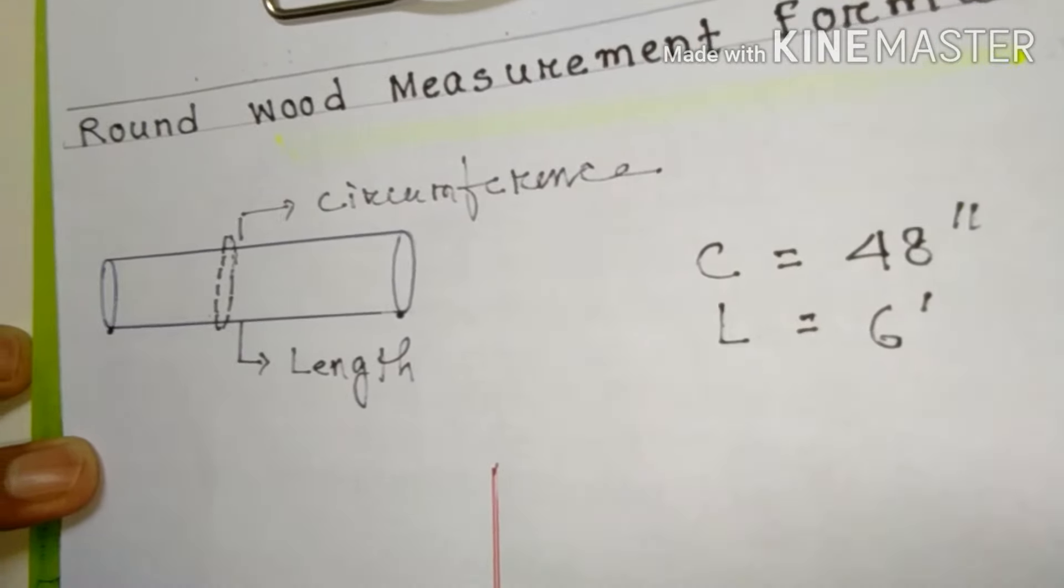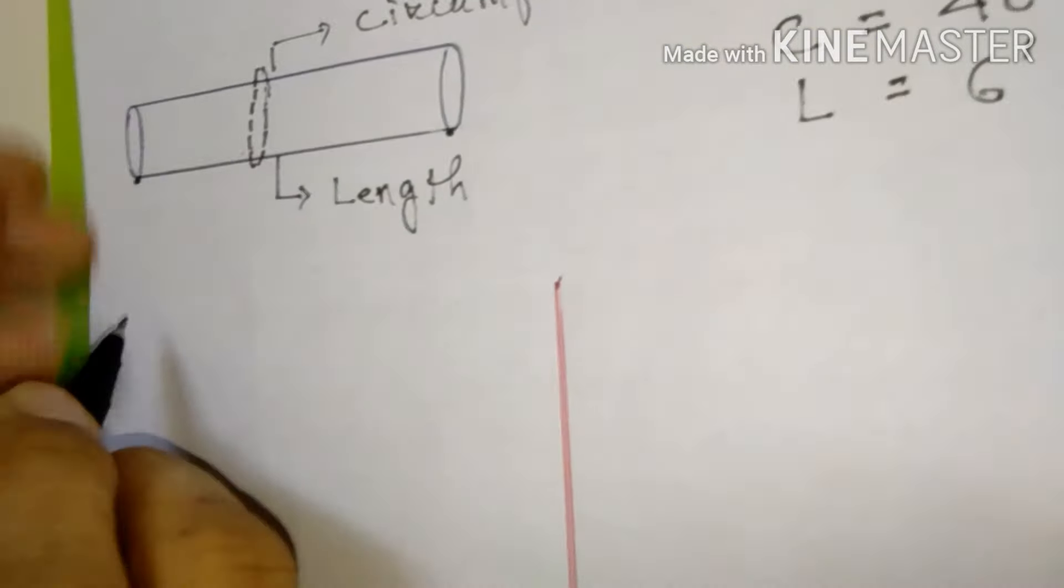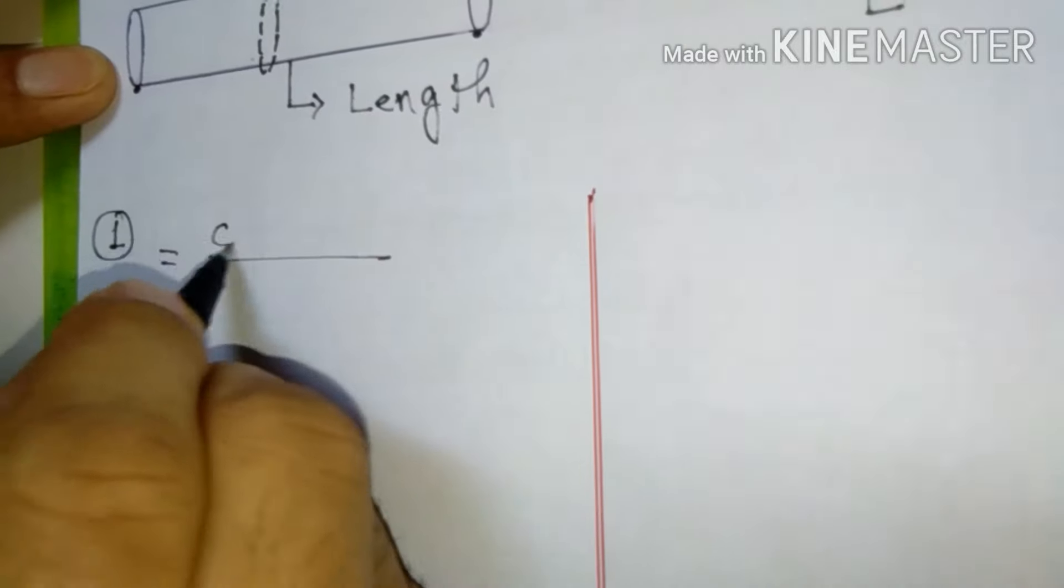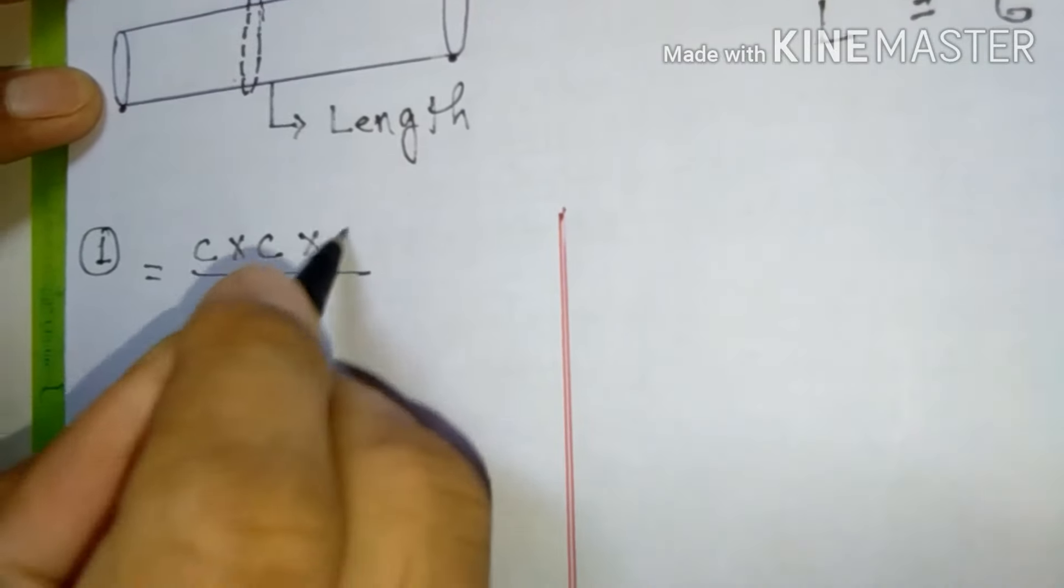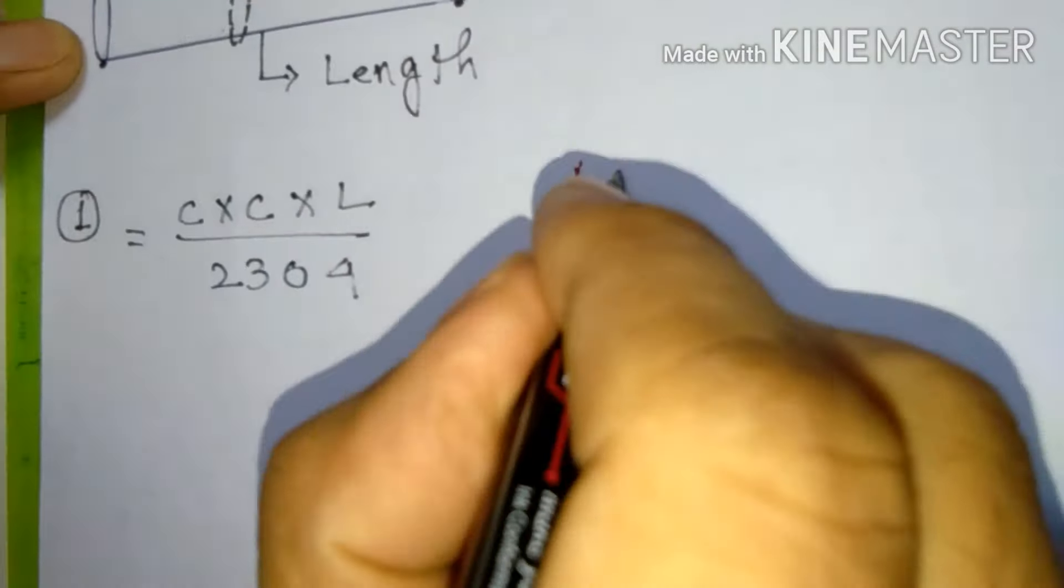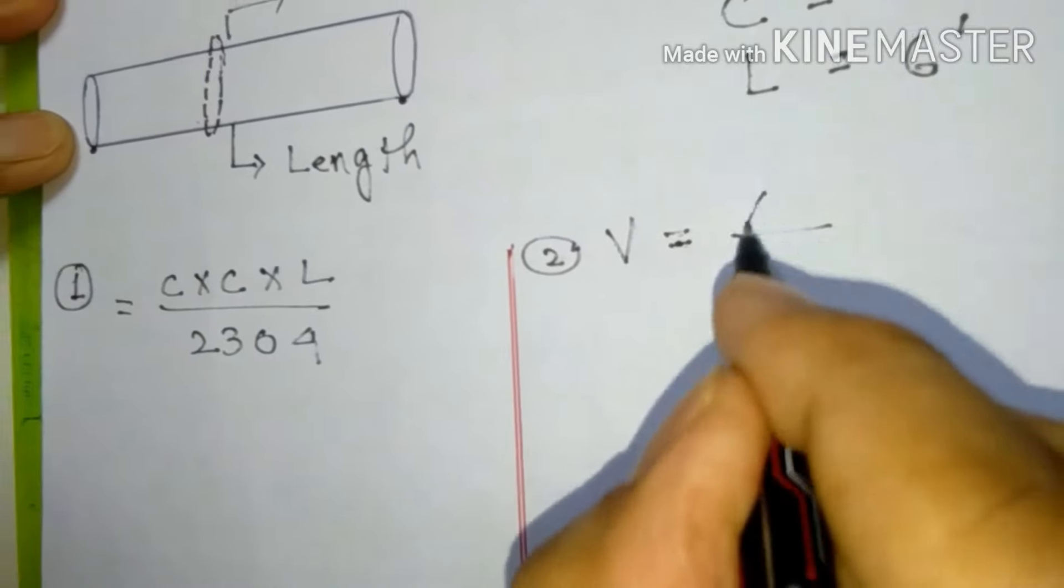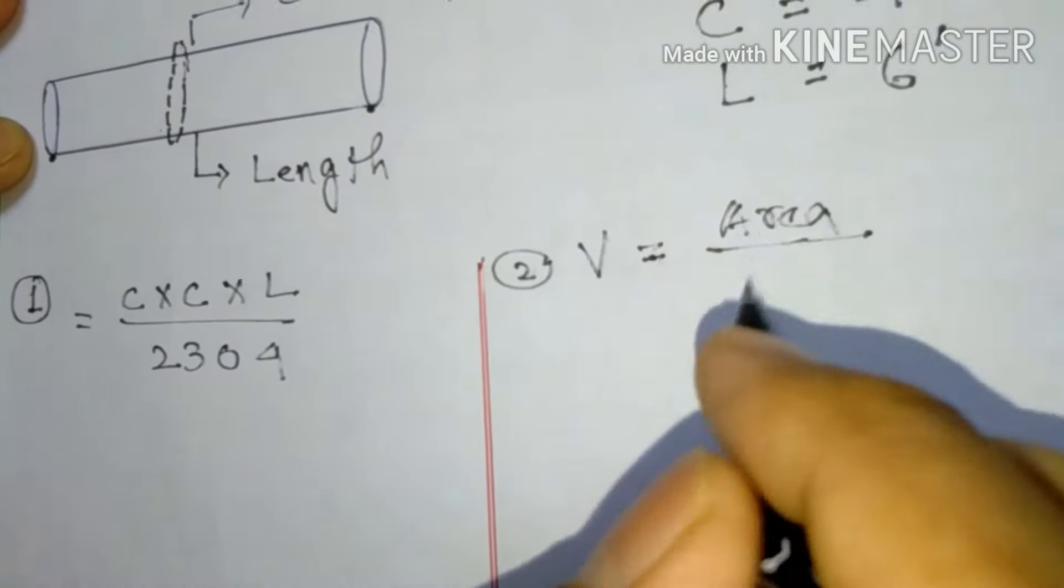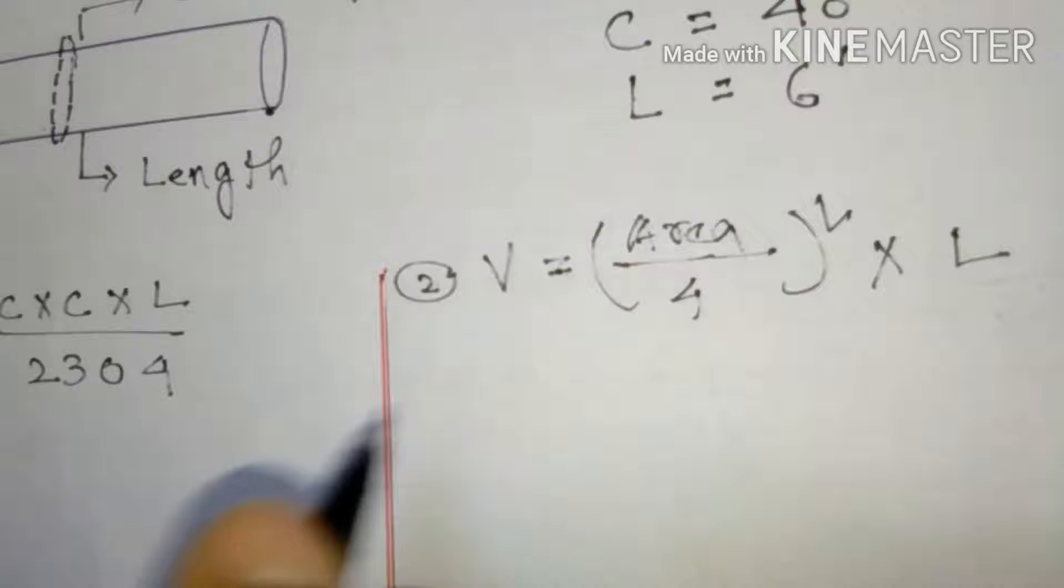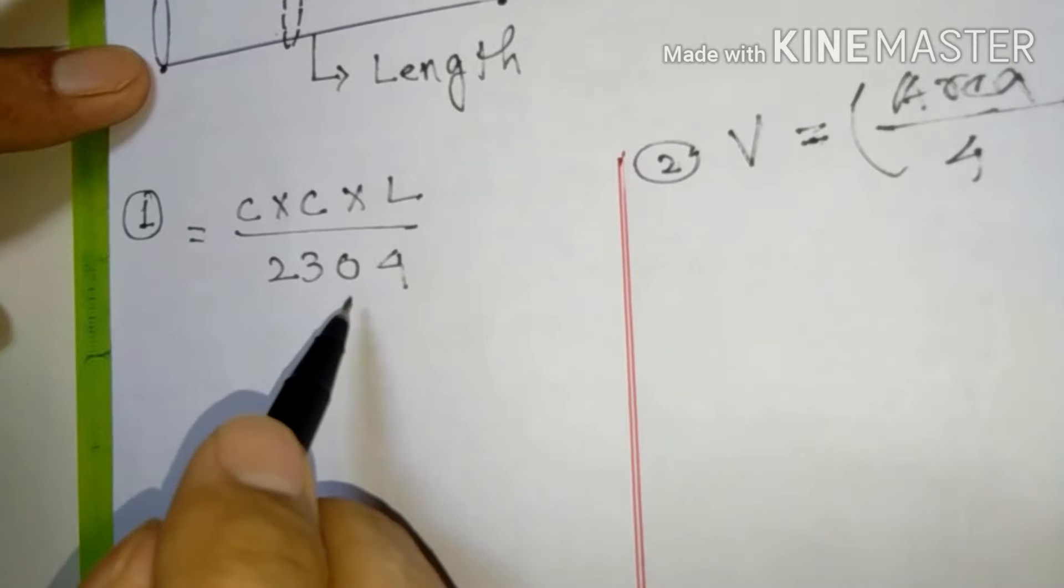Now how can we find out CFT of this piece of wood? CFT means cubic feet. This can be found in two ways, two formulas. First formula is circumference into circumference into length by 2304. The second formula is volume equals area by 4 squared into length.